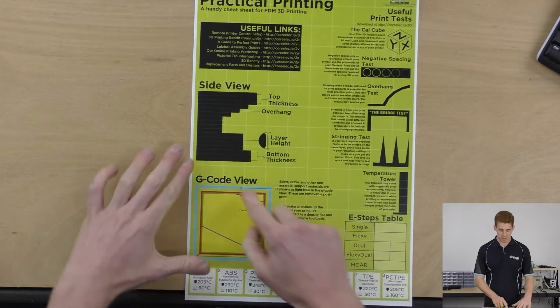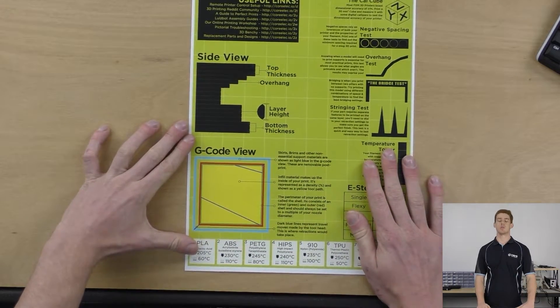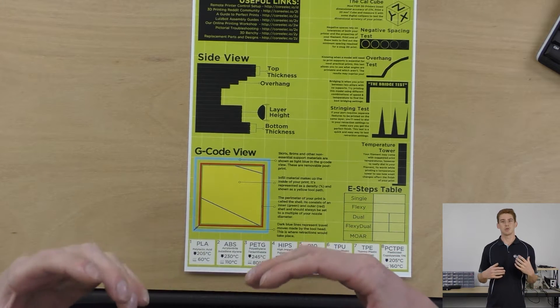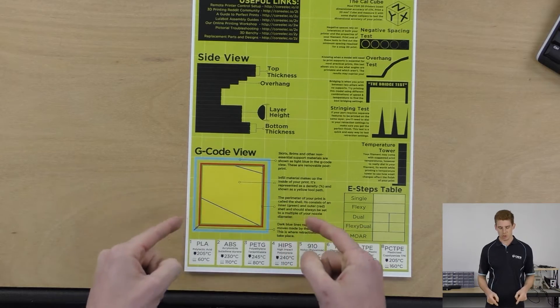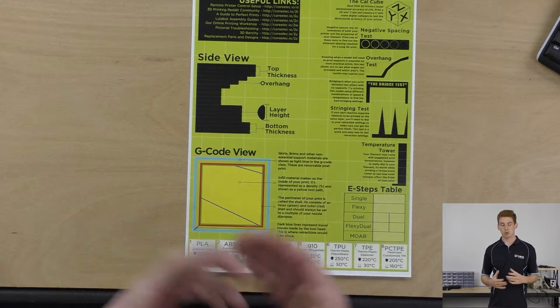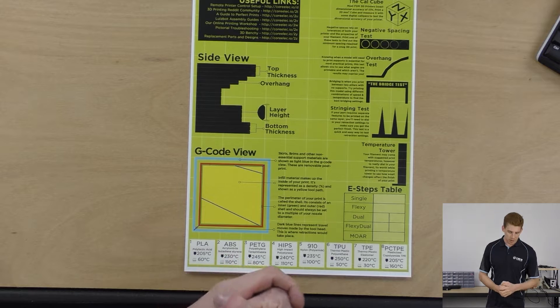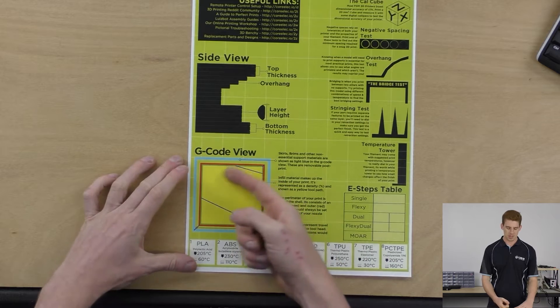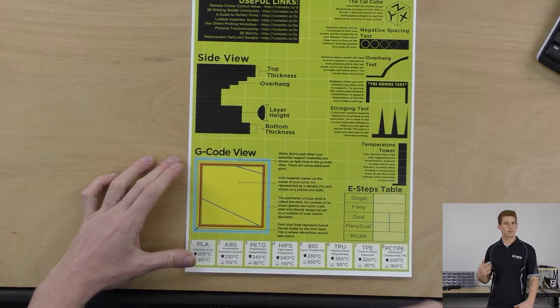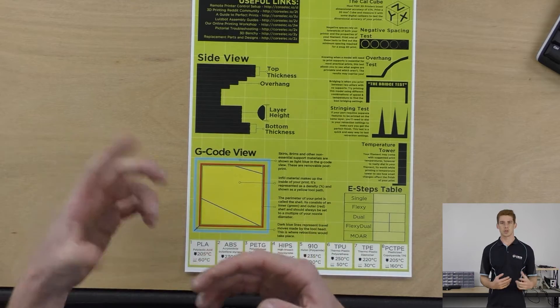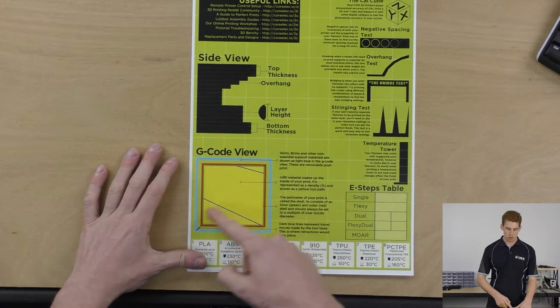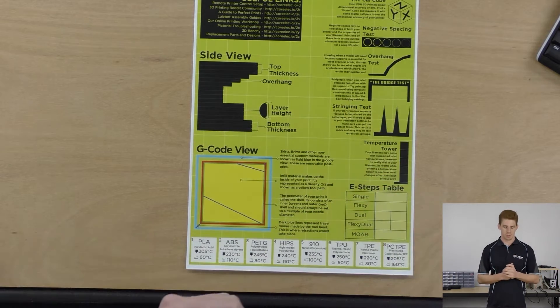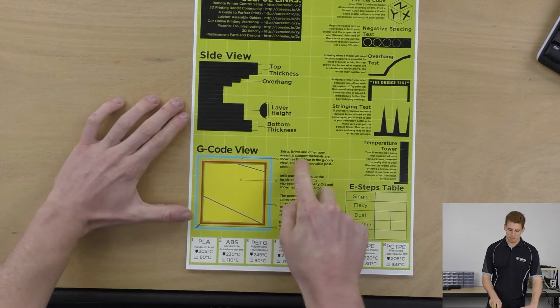Next up, we've got the G-code section down the bottom here. This is the G-code view of a 3D print and this is a pretty slicer specific thing, but if you're using Cura, Lulzbot edition especially, this is what you'll see if you were to look at the bottom layer of a cube print for example. Like I said before, the bottom and top thicknesses are usually solid, so this would be the bottom layer because the inside of it is actually solid. If you were looking at the middle layer of a cube with a certain infill percentage, you'd actually see a cool yellow crosshatch pattern here.